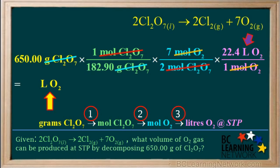So we can write that here as the unit for our answer. Using a calculator, we go 650 divided by 182.9 times 7 divided by 2 times 22.4, and the answer, rounded to three significant figures, comes out to 279.